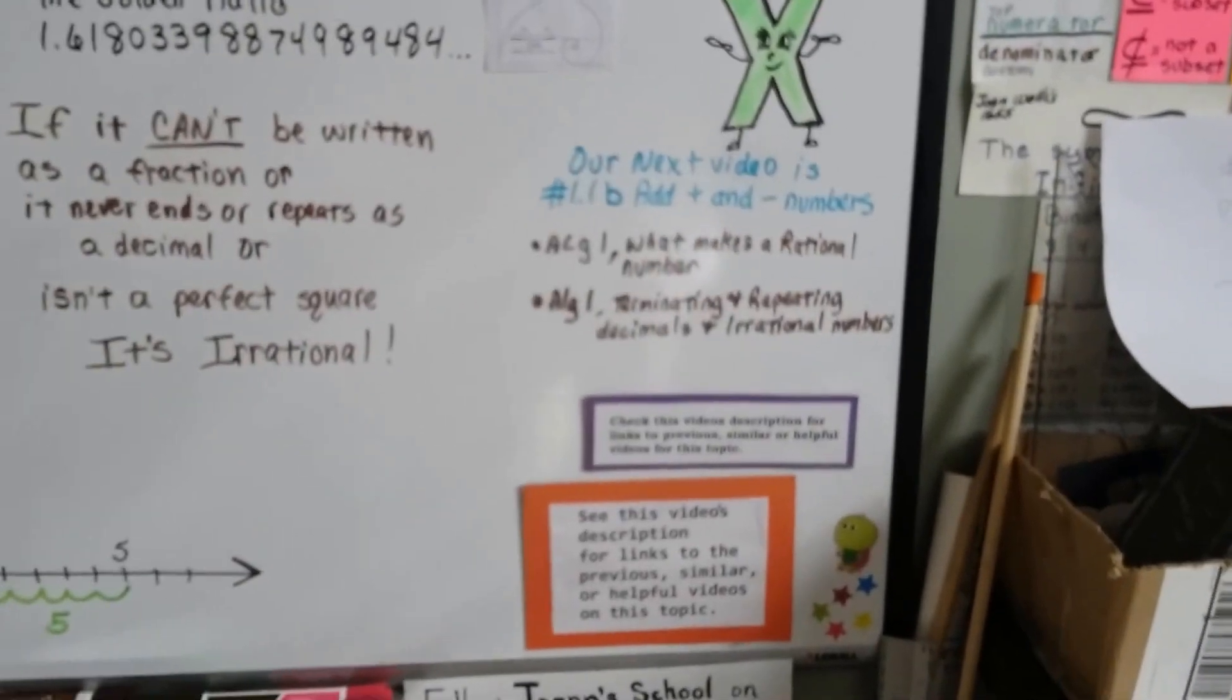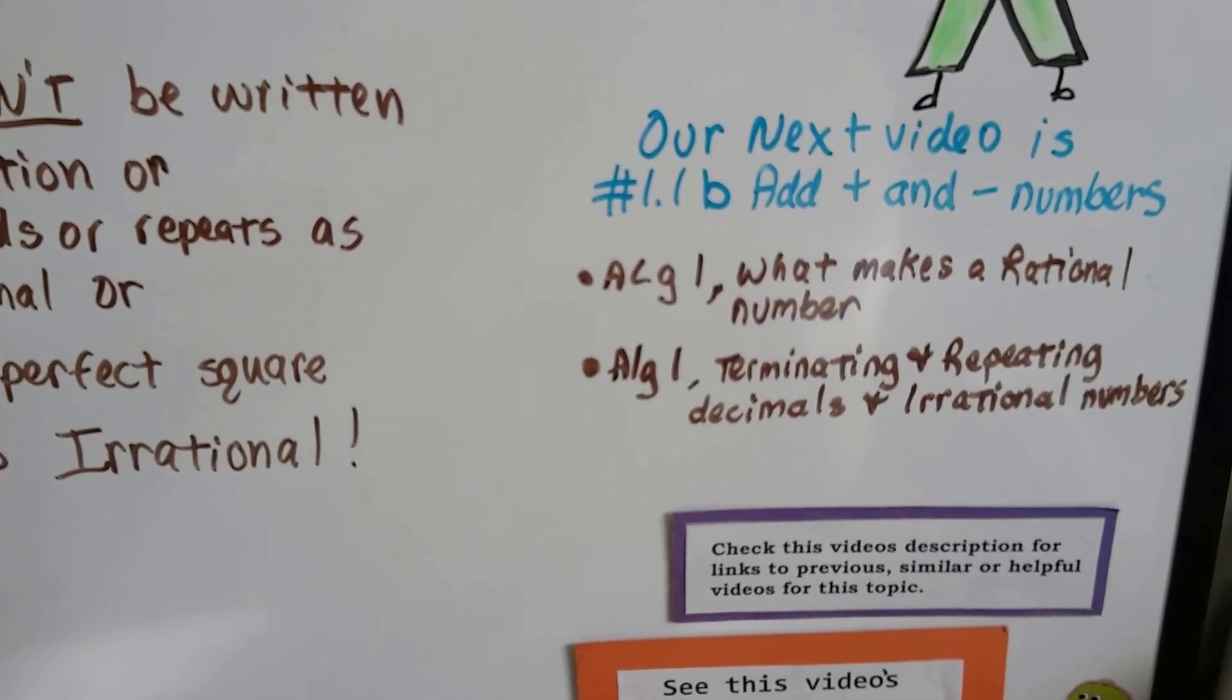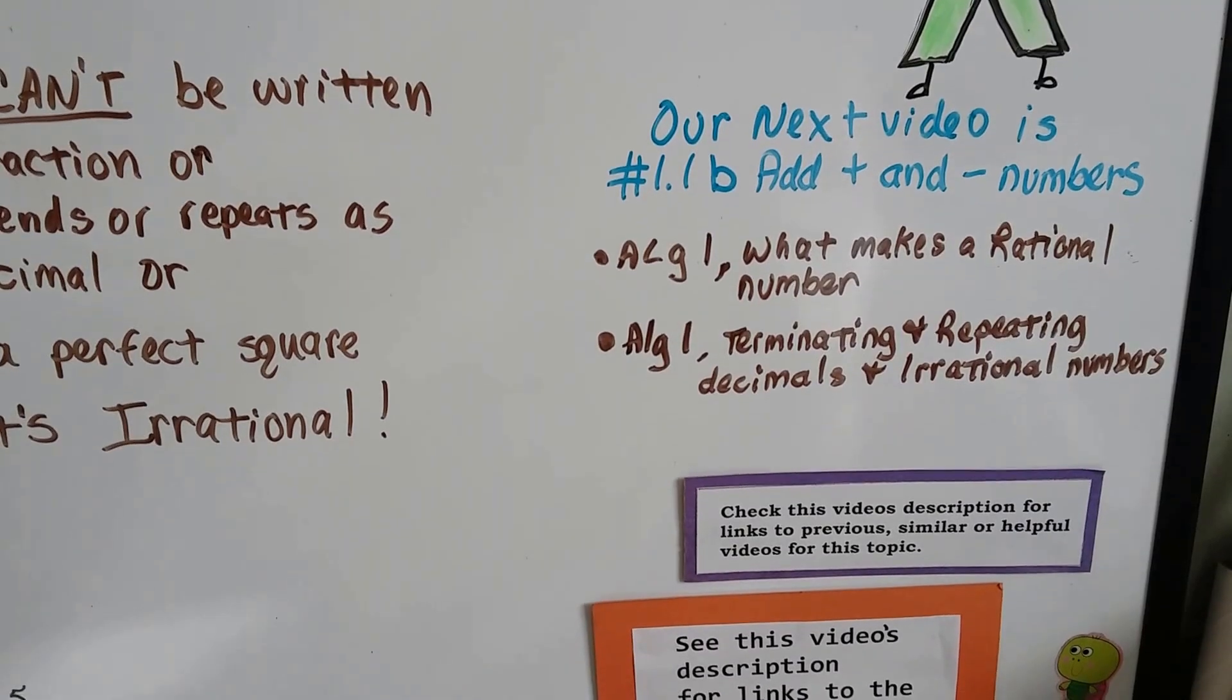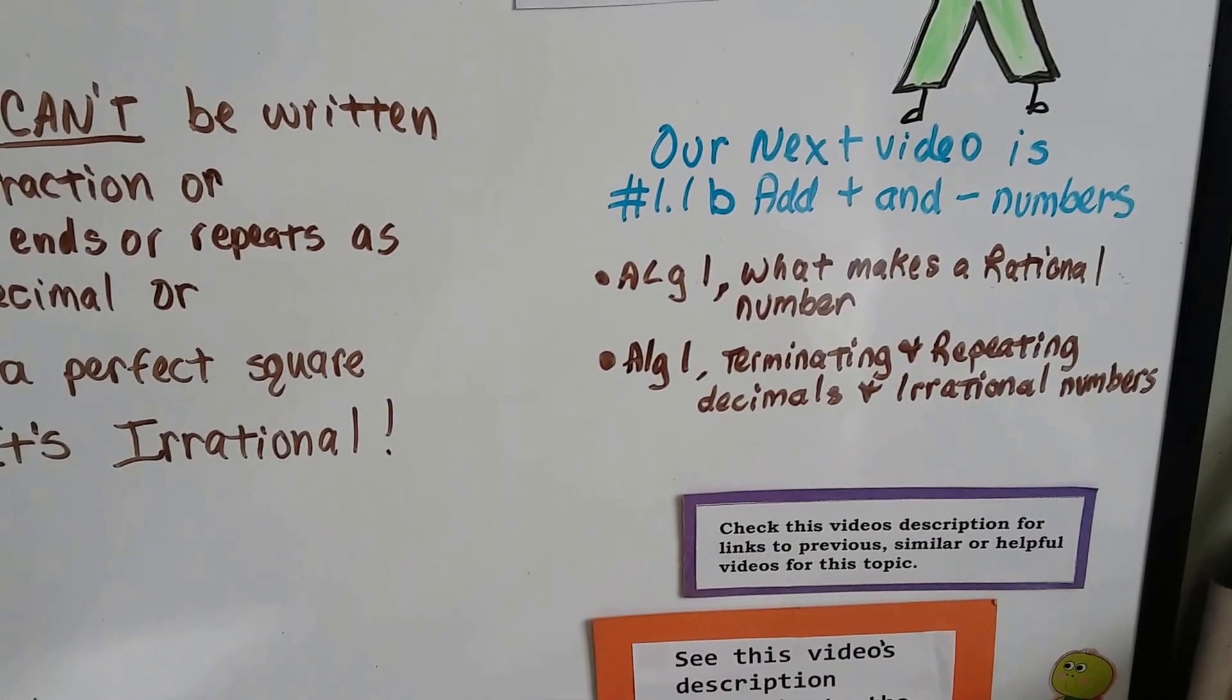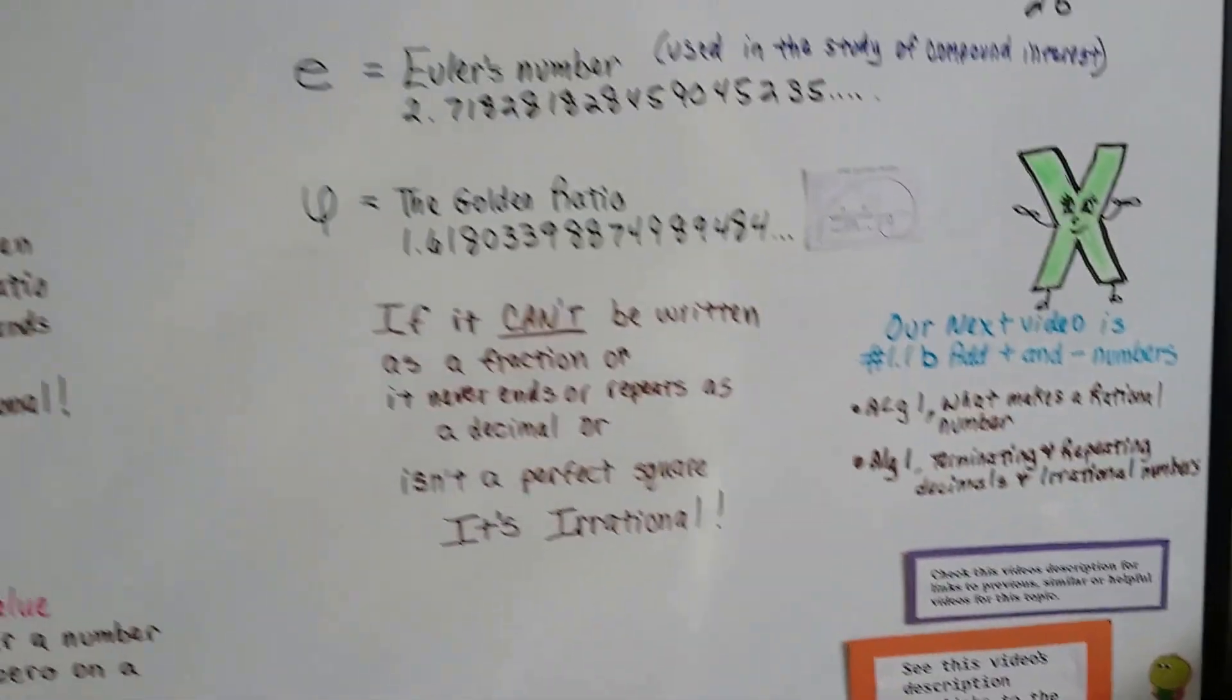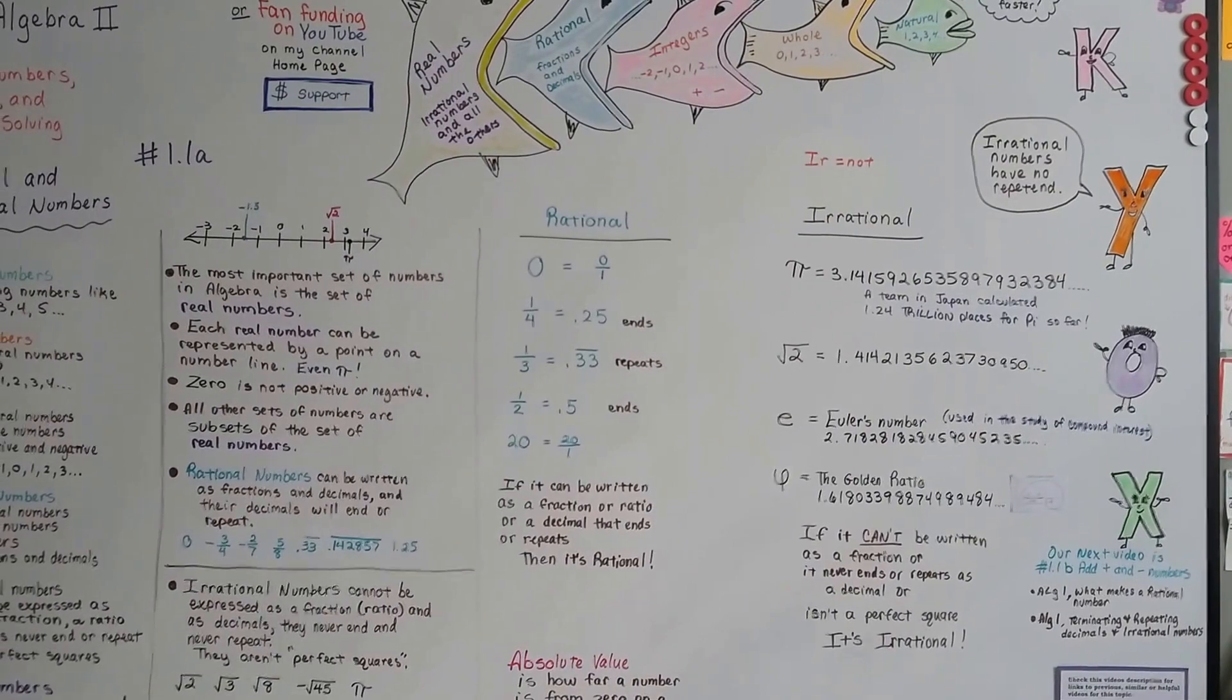Our next video is 1.1b—we're going to talk about adding negative and positive numbers. You really should already know how to do that for algebra 2, but this is a review to get you running. If you look in this video's description, there will be links for what makes a rational number and terminating and repeating decimals in rational numbers from algebra 1. Let's move on and talk about positive and negative integers. I'll see you there. Bye.